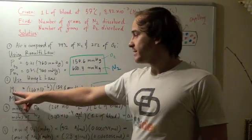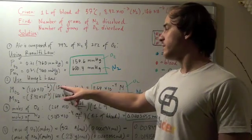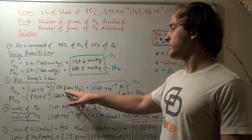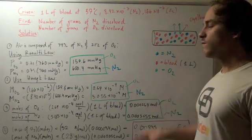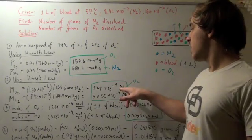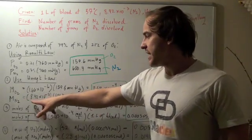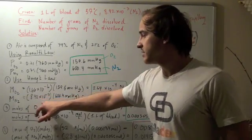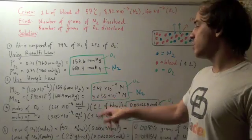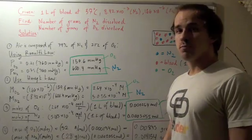Therefore, we get 1.66 times 10 to the negative 6 times 159.6, and we get 2.64 times 10 to the negative 4 molar for O2, or moles per liter. We do the same thing, except we change the partial pressure for nitrogen and the constant for nitrogen, and we get 5.055 times 10 to the negative 4 molar, or moles per liter.